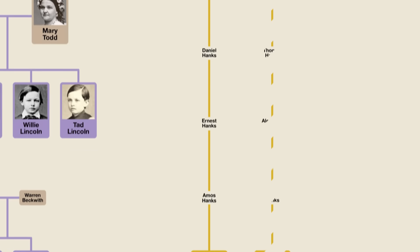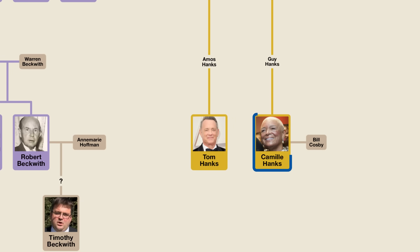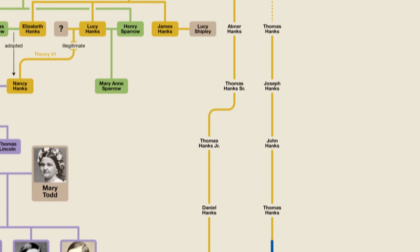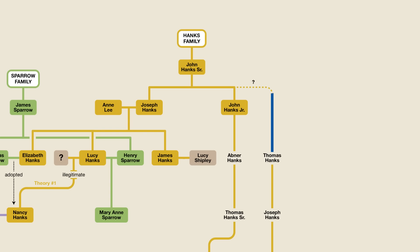Another famous person with the last name Hanks is Camille Hanks, wife of the now disgraced comedian Bill Cosby. She's the direct descendant of a man named Thomas Hanks, who, according to some sources, may have also been a brother of Joseph Hanks. However, the sources are not good ones, so I couldn't confirm that. There's also the fact that Camille Hanks is Black, so I'm not sure if this shaky connection is due to the fact that a white, slave-owning male perhaps had a child with a Black, enslaved female — something that unfortunately happened quite frequently prior to emancipation.